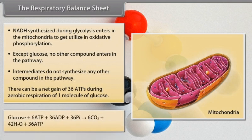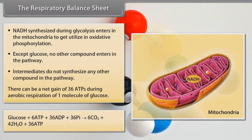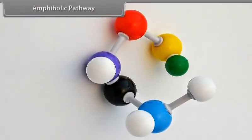The overall equation: Glucose + 6O₂ + 36ADP + 36Pᵢ → 6CO₂ + 42H₂O + 36ATP. This represents the amphibolic pathway.